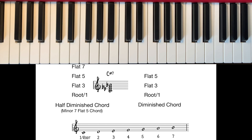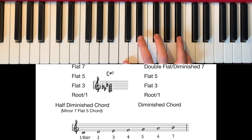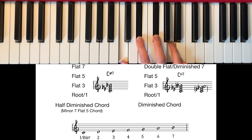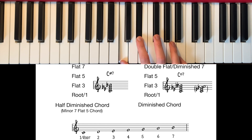To make a diminished chord from a half diminished chord, we just need to flatten the seventh again, turning it into a double flattened seventh, also known as a diminished seventh. So in our example in C: the root stays the same C, the flattened third stays the same E flat, the flattened fifth stays the same G flat, but we flatten the flattened seventh B flat again to an A, turning it into our diminished seventh and creating our C diminished chord. A diminished chord is just a collection of minor thirds stacked on top of each other: a minor third between C and E flat, E flat and G flat, G flat and A, and A and C.